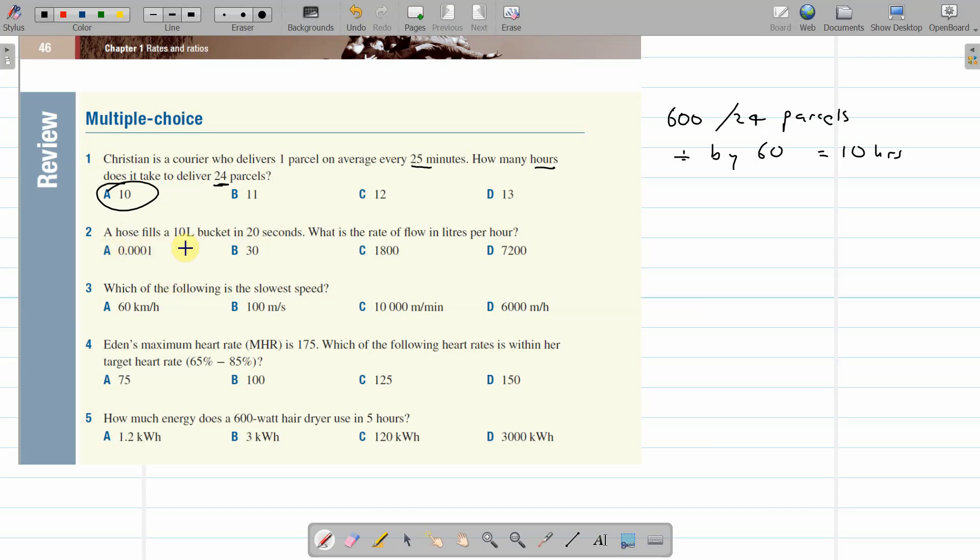Hose fills a 10 litre bucket in 20 seconds. What's the rate of flow in litres per hour? So we've got a unit of litres here, which is good, but we've got seconds here. So we're going to find out how many seconds in an hour first, and then we can divide it up into 20 second lots.